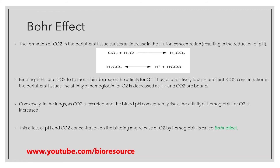There are two different things to note here. In the lungs, the affinity for oxygen is increased because there is a higher pH and a lesser amount of carbon dioxide present, resulting in increased affinity of hemoglobin for oxygen. This effect of pH and carbon dioxide concentration on the binding and release of oxygen by hemoglobin is called the Bohr effect.